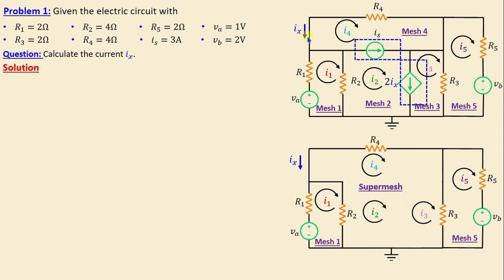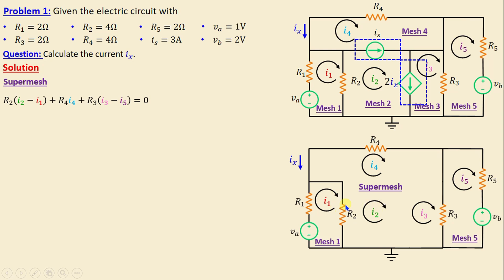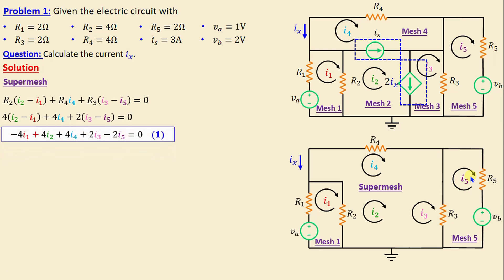Applying Kirchhoff's Voltage Law in the super mesh, we write: R2(i2 − i1) + R4·i4 + R3(i3 − i5) = 0. Replacing the resistors with their numerical values, we obtain: −4i1 + 4i2 + 4i4 + 2i3 − 2i5 = 0.